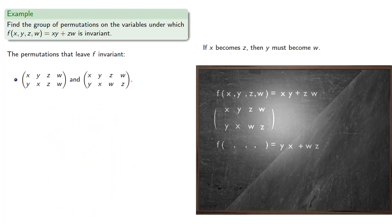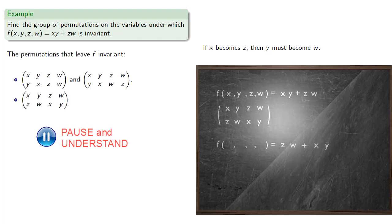Or, if x becomes z, then y must become w, because we need to get that product zw. And again, z could become x, and w could become y. Or, z could become y, and w could become x.